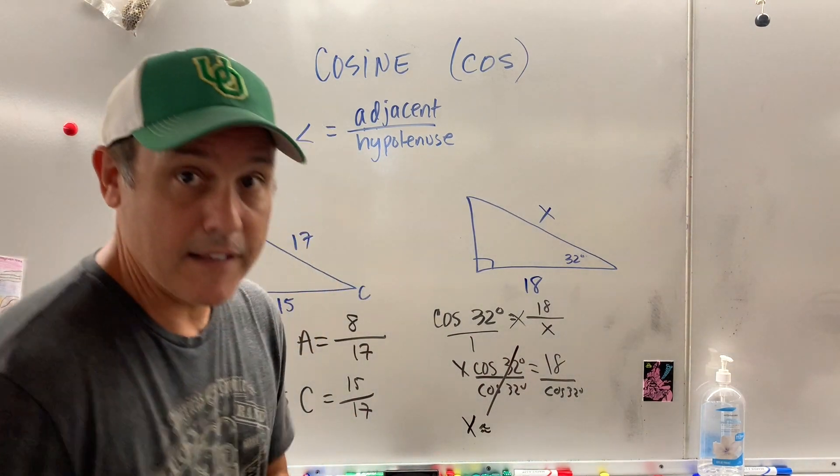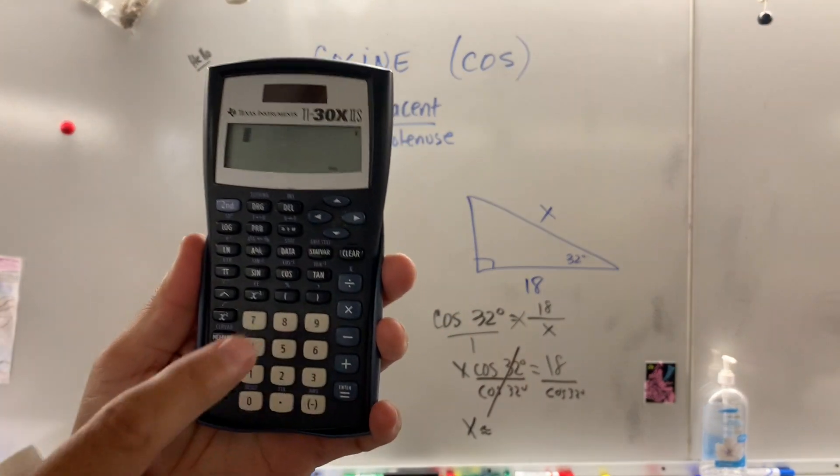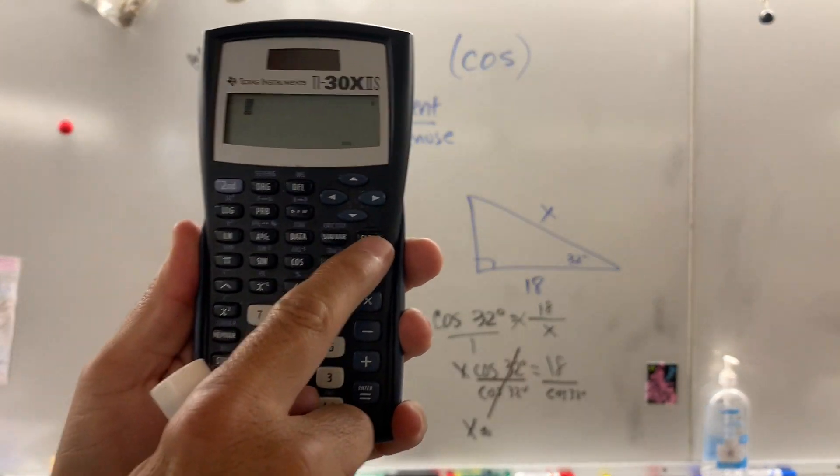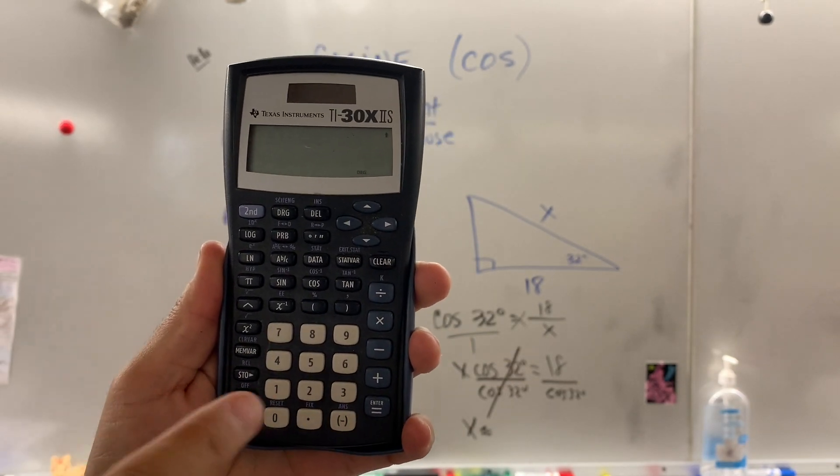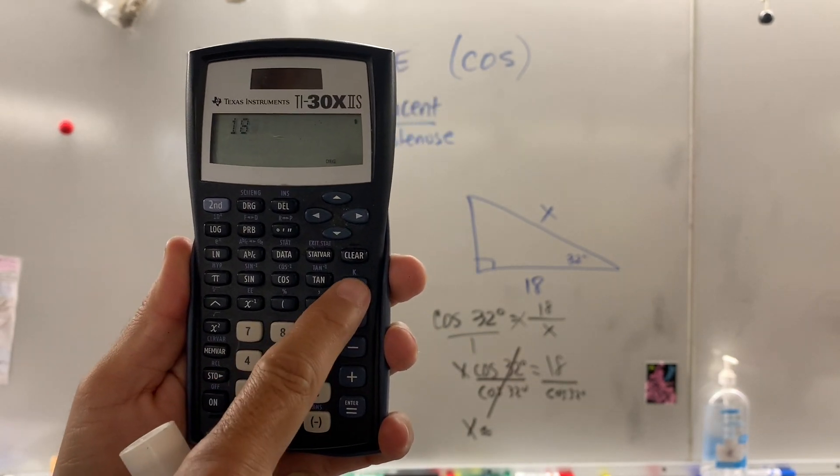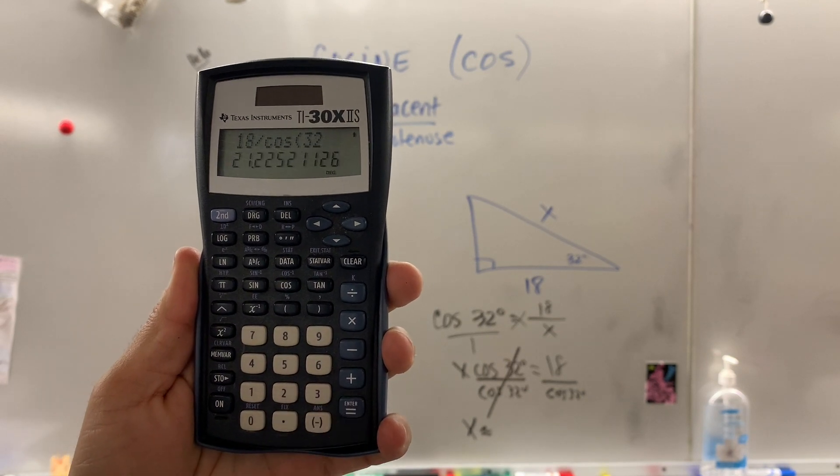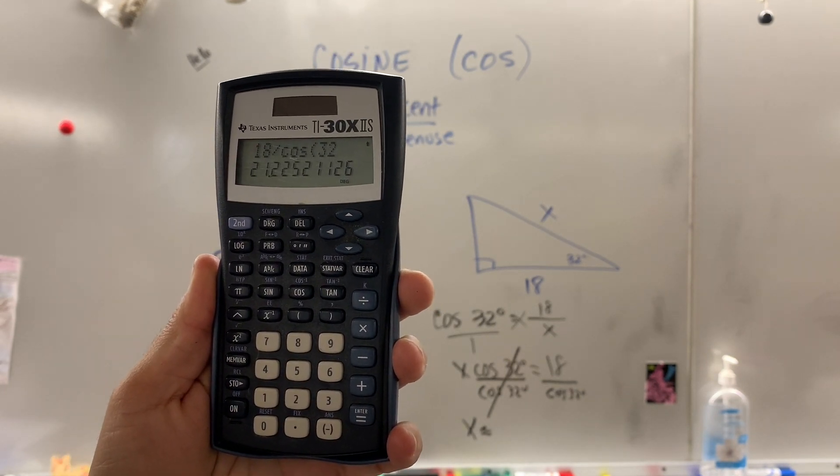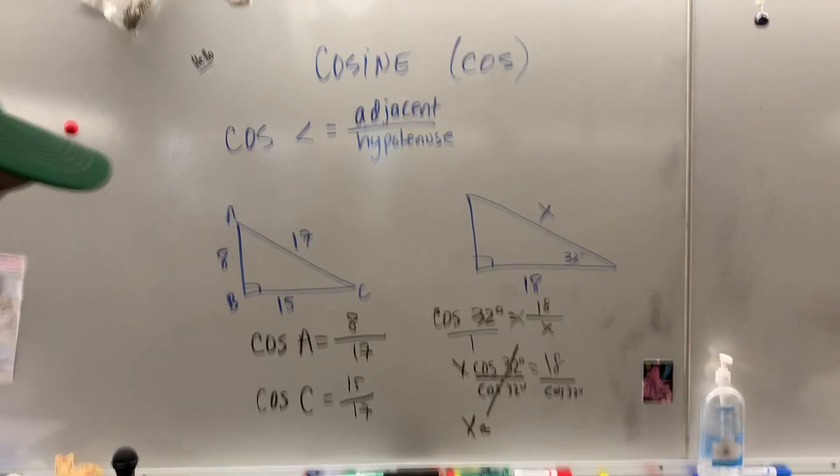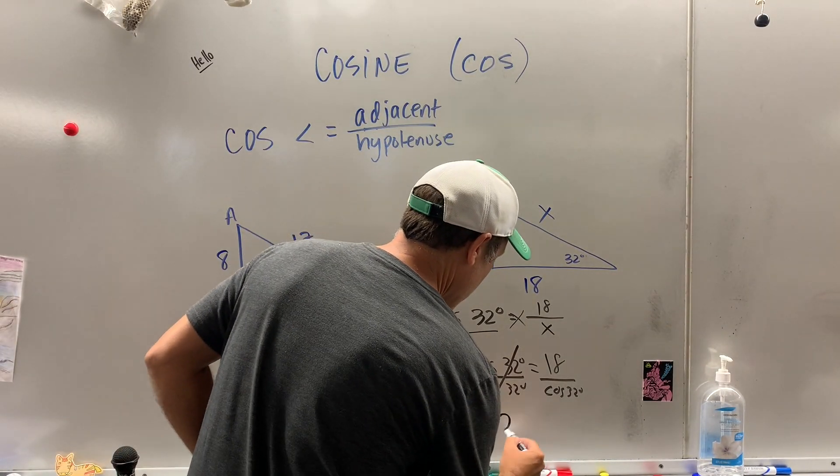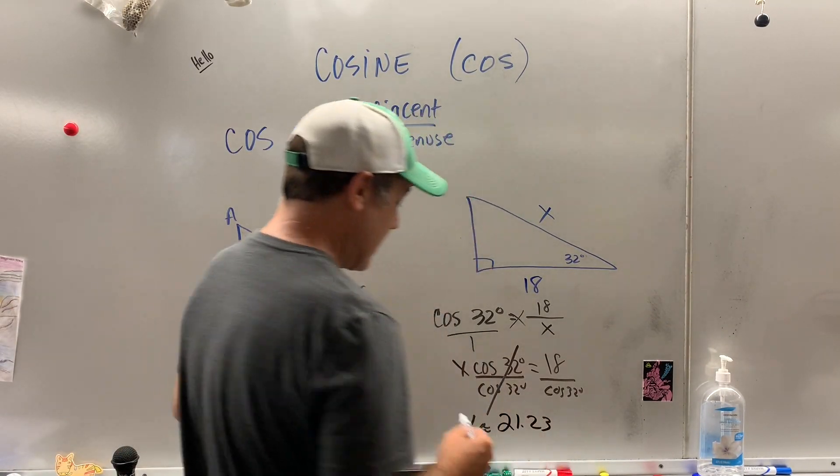So X is about, so now you bust out the calculator again. Okay, here we go. You got to clear it. All right, so you just type in what you see. I see an 18, I see divided by, I see cosine, I see 32. Survey says about 21.23.